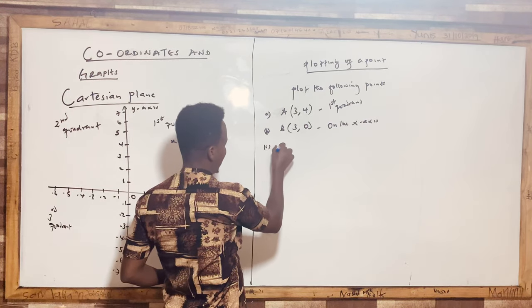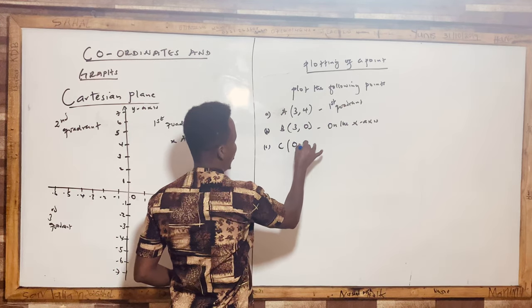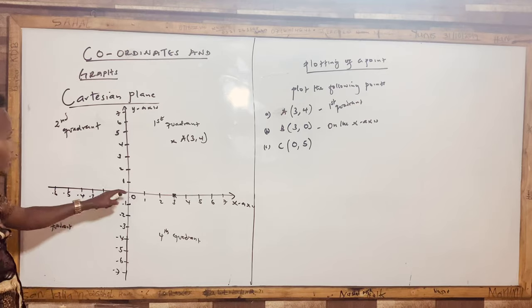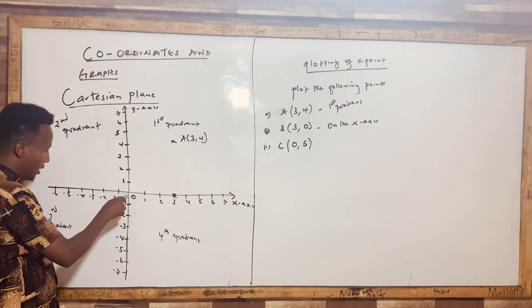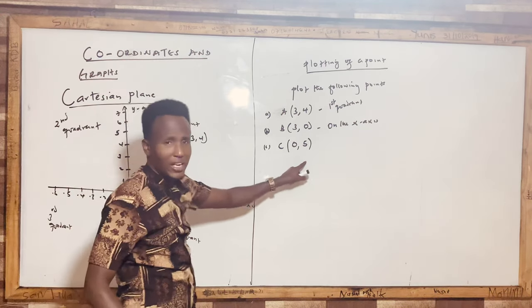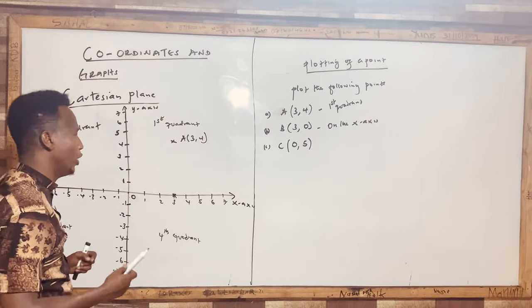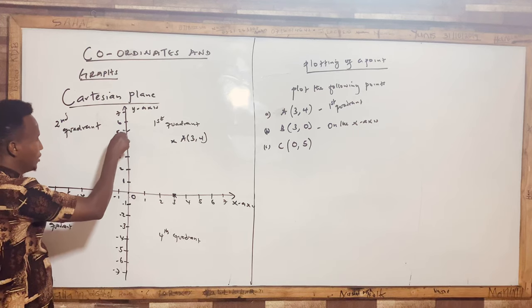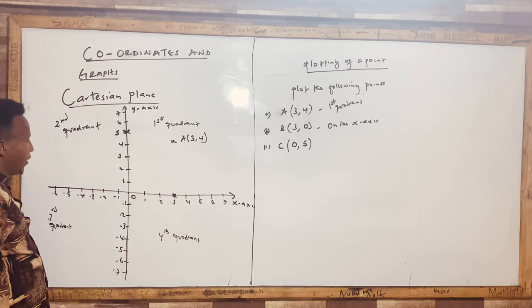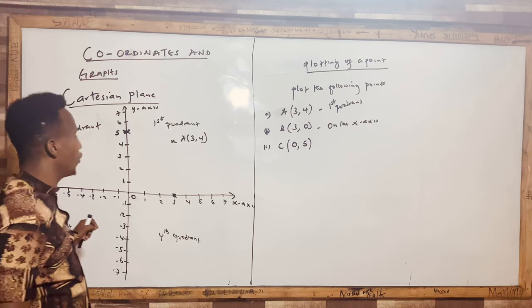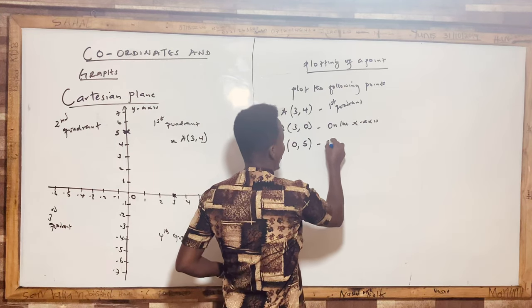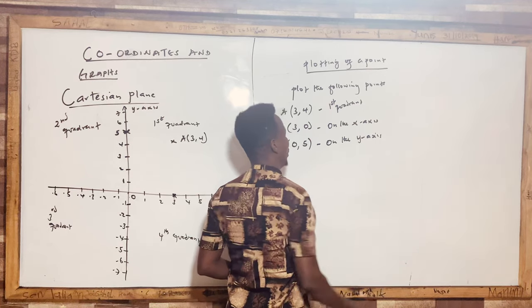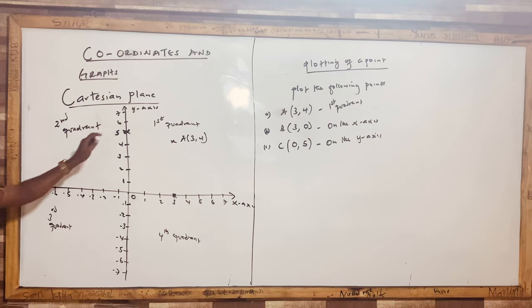Now point C is (0, 5). Zero is for x, so there is no left or right movement. Then y is positive 5, so I move up to 5 on the y-axis. This point falls on the y-axis.